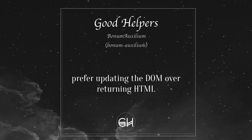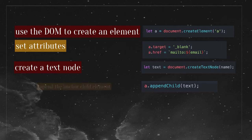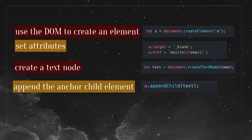Helpers are very important. They're the things that don't necessarily fit into a component but the component uses them. You should always prefer updating and working with the DOM directly over returning HTML from a component. Say you write a helper that returns an email address - a better way is to use the DOM to create an element, set the attributes, create a text node, and append that anchor as a child element. By creating it as a text node instead of returning HTML, you let the browser take care of escaping. React strongly recommends this approach of interacting directly with the DOM.